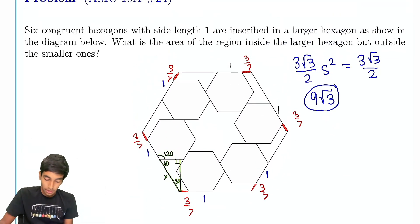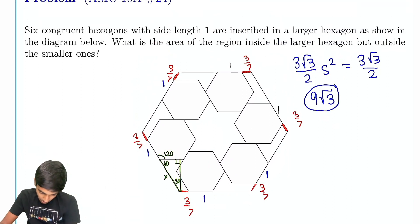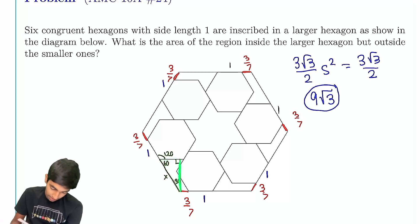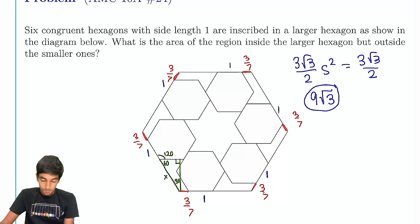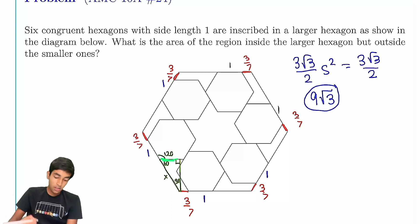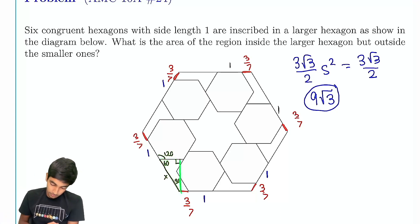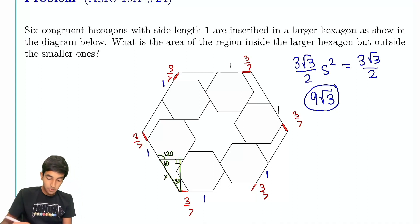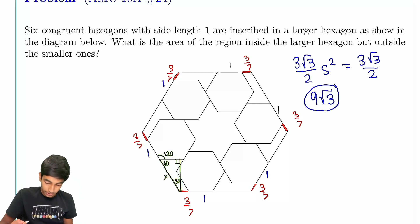So how should we approach this? We can either find the short leg or the height of the 30-60-90 triangle. The short leg is just a random point on the hexagon — not anything meaningful. So it's probably better to find the height. If we can find this height, we're basically finished with the problem.